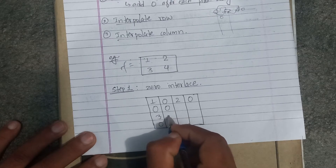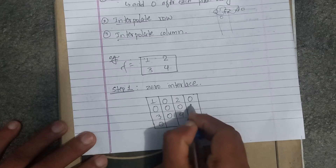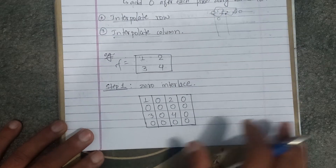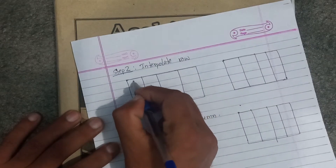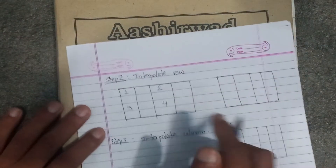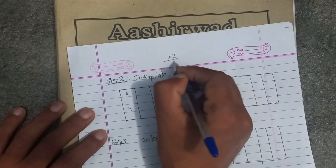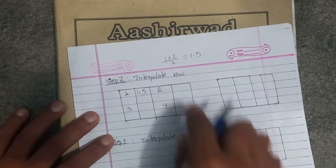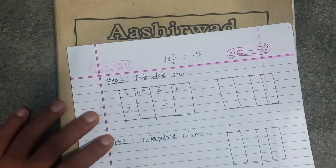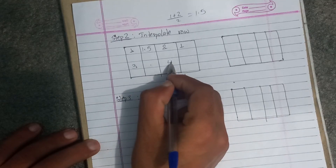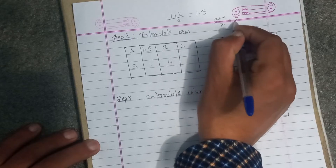We need to do zero-interlaced — zero-columnize — and then work through the values. Zero is zero. Now we will create a new pixel. Interpolate the values: for example, 1, 2, 3 become averaged into new pixels — 1, 2, 2, 1, 2, 2, 3, 2 — calculating averages of adjacent pixel values.